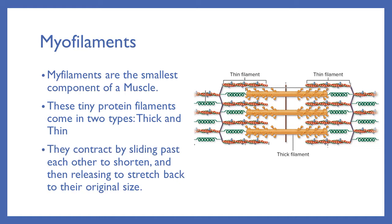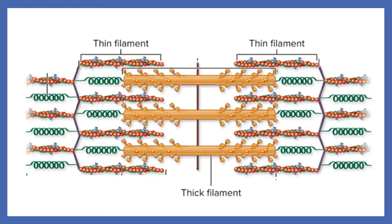They contract by sliding past each other to shorten, and then releasing to stretch back to their original size. This picture shows us them in their relaxed state — the thin filaments on the side and the thick filament in the middle.